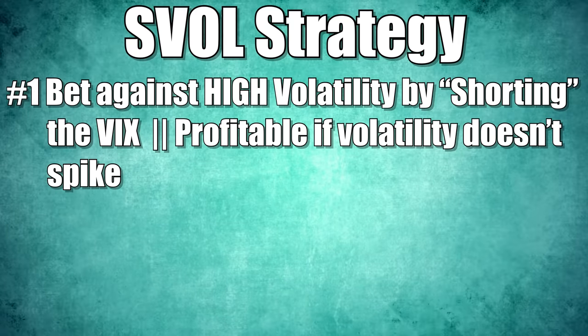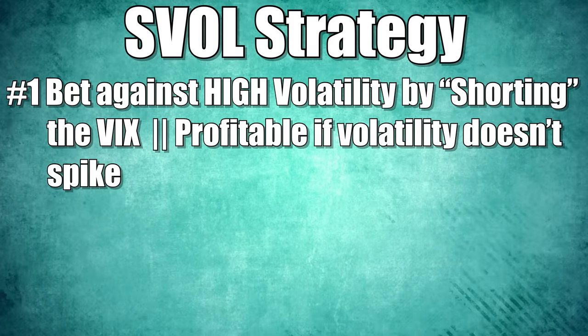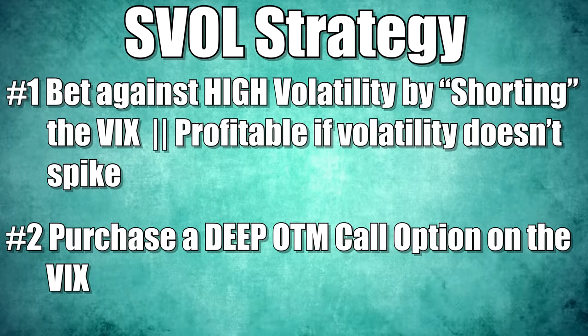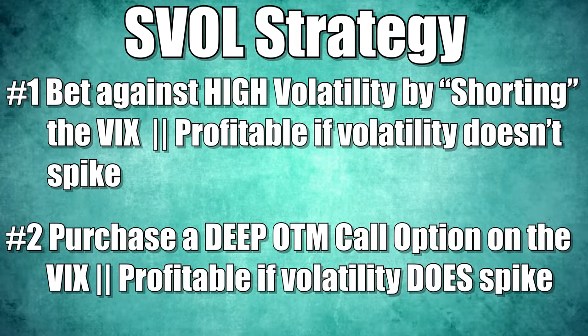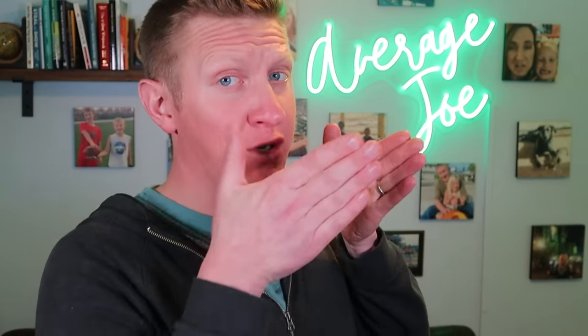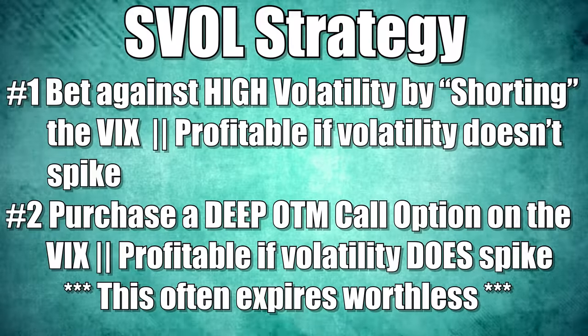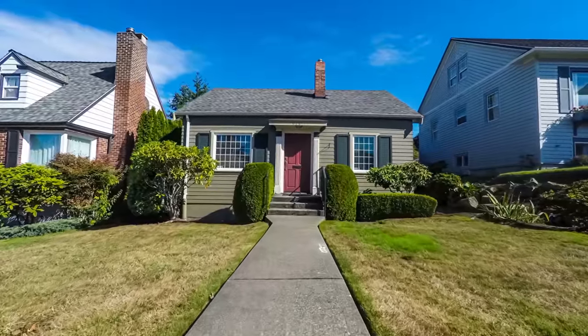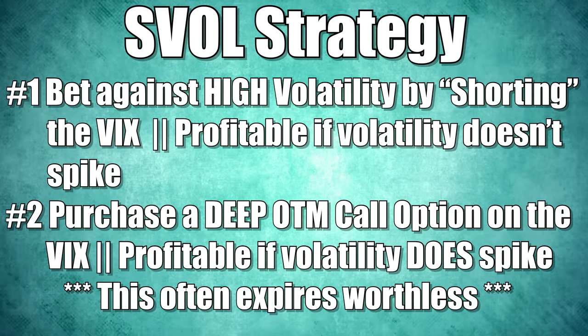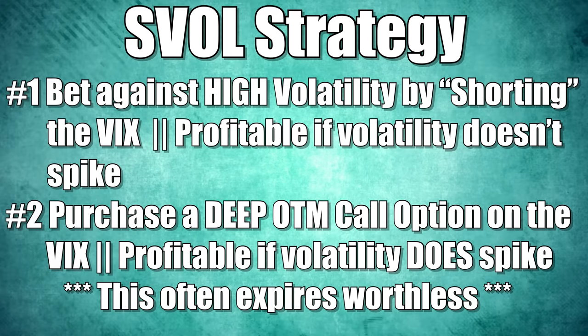But what if volatility does spike — are we screwed? The short answer is no, and the much longer answer is hard to say. The second step SVOL takes to protect against market spikes is to purchase a call option on the VIX index that is way out of the money, and would only be profitable in the event of a major spike in volatility. We're betting the VIX will go down, but we also make a very small bet that it could go way up, just to hedge our position. Most of the time this hedge would expire worthless — it's like buying homeowner's insurance. Some of the money SVOL makes every month goes to this insurance hedge against the potential of the VIX spiking.